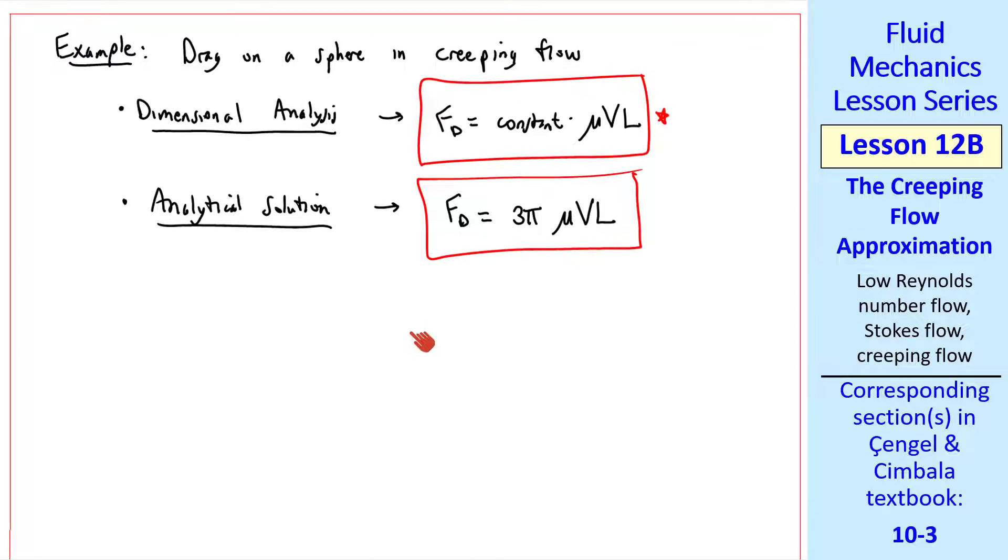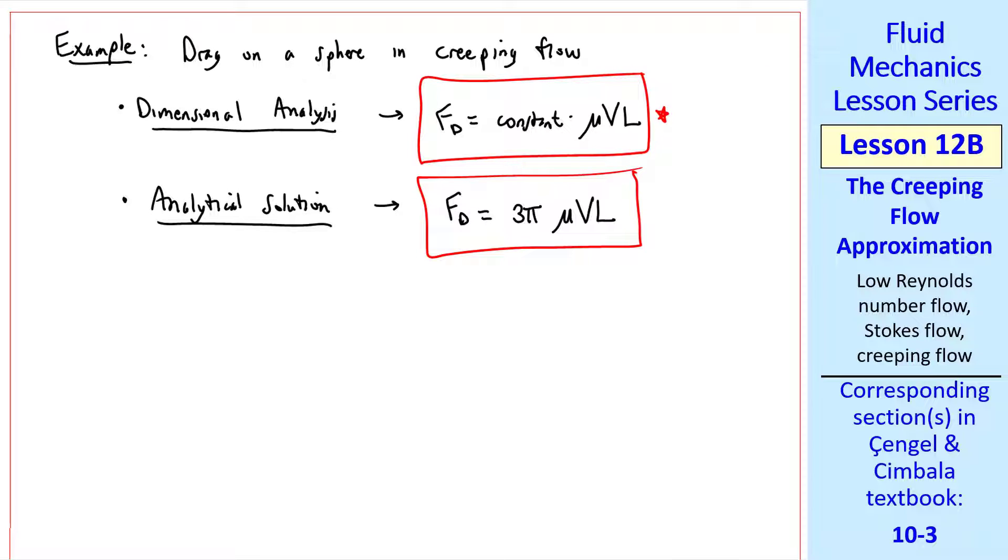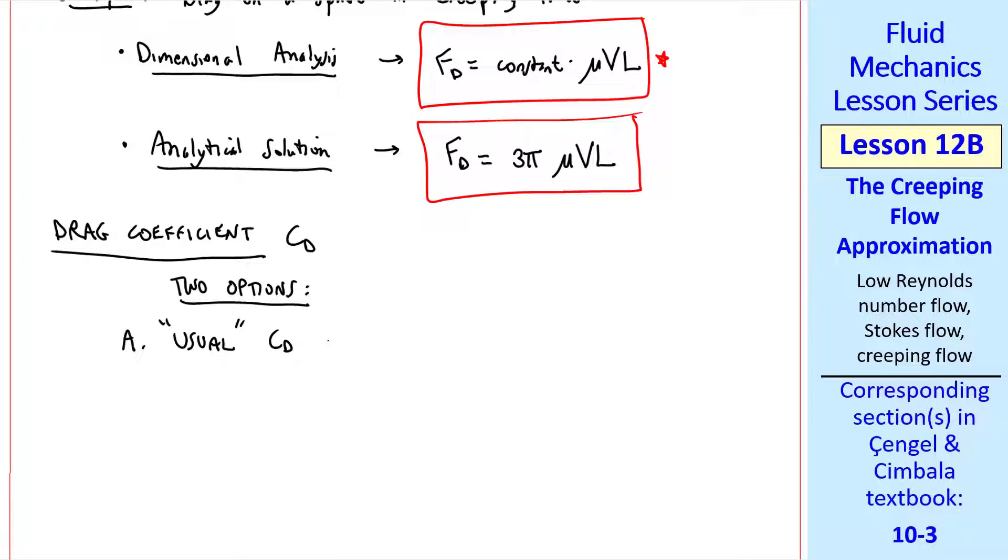In fluid mechanics, we like to talk about non-dimensional parameters like drag coefficient instead of FD itself. Here we have two options to define CD. The usual definition of CD, which is CD equal FD over 1 half rho V squared A. A recall is the projected frontal area, which is a circle if you look at the sphere from upstream.